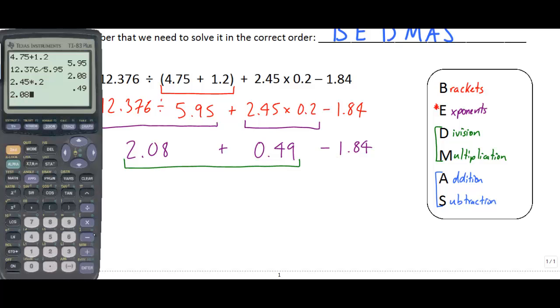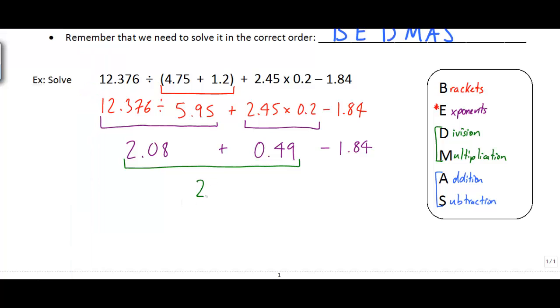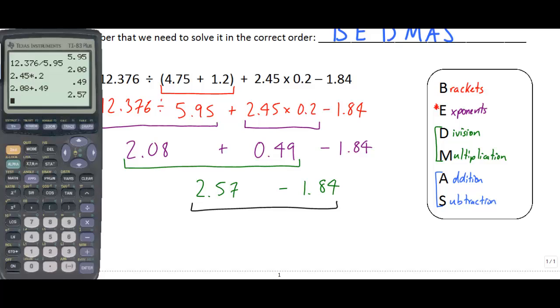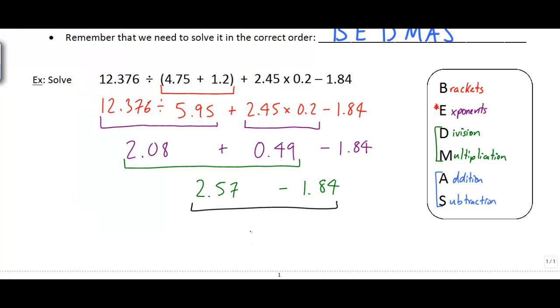So 2.08 plus 0.49 is 2.57, and I've still got minus 1.84. That's the last step I'm going to do there. 2.57 minus 1.84, my answer is 0.73.